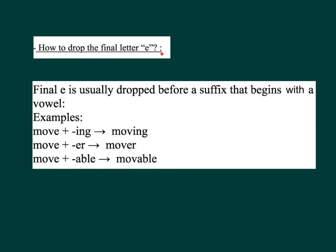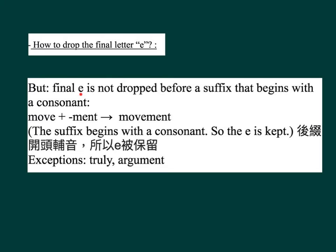How to drop the final letter E: the final E is usually dropped before a suffix that begins with a vowel. Examples: move + ING = M-O-V-I-N-G, moving; move + ER = M-O-V-E-R, mover; move + ABLE = M-O-V-A-B-L-E, movable. But final E is not dropped before a suffix beginning with a consonant: move + MENT = M-O-V-E-M-E-N-T, movement. The suffix begins with a consonant, so the E is kept.